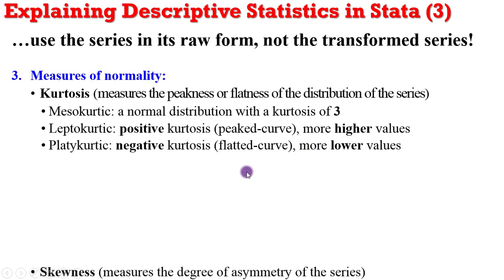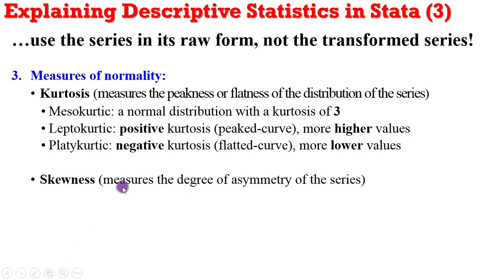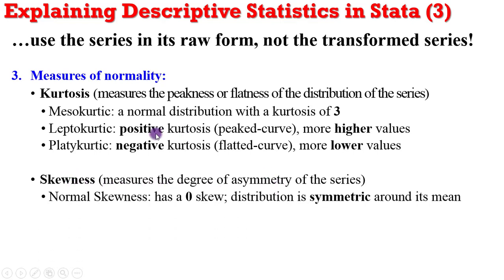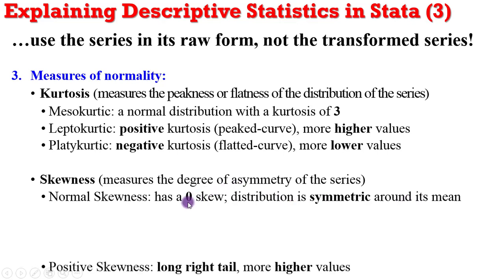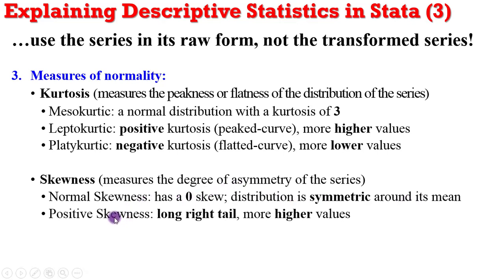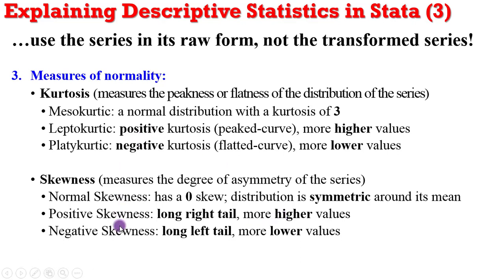On skewness, which measures the degree of asymmetry of the series: if a series has normal skewness, it has a distribution that is symmetric around the mean and the skewness value is zero. For positive skewness, the series has a long right tail indicating more higher values above the sample average, while negative skewness indicates a long left-tailed distribution with more lower values below the sample average.